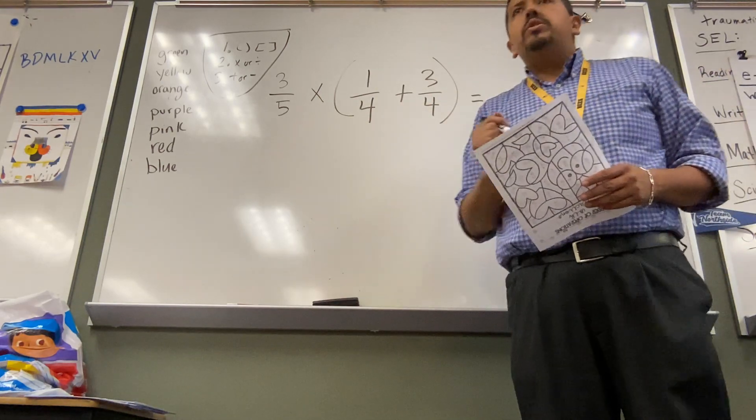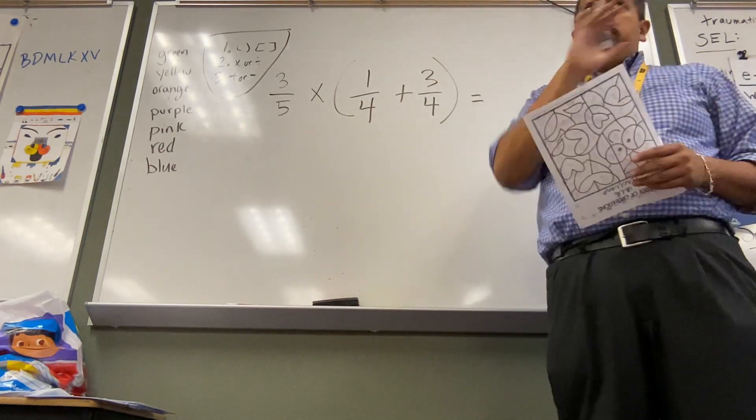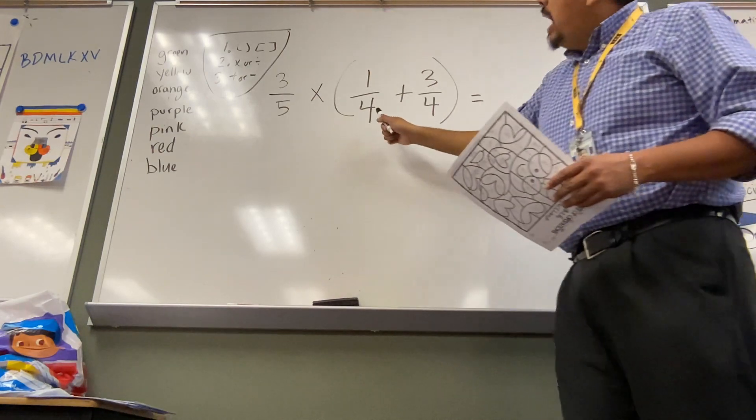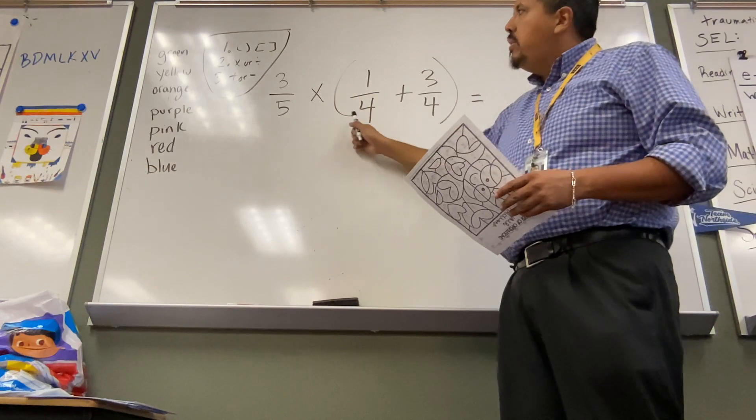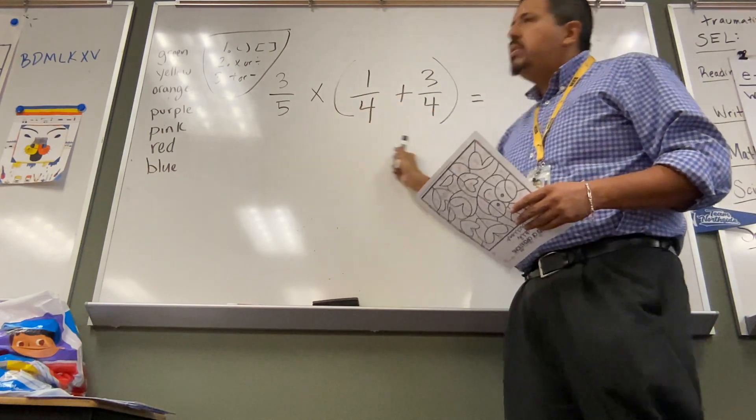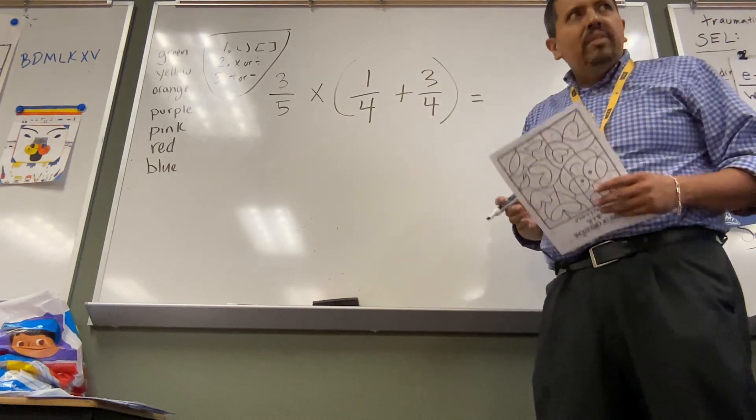What am I going to do first? I'm going to answer it for today. I'm going to do my parentheses. How can I multiply three-fifths? I don't know what I'm multiplying it by. I have to solve what I have in parentheses first.